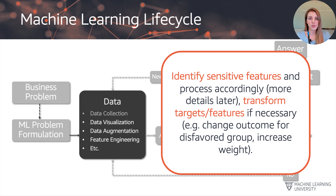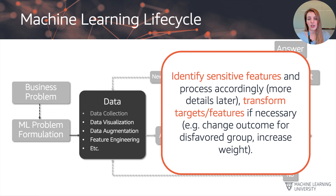When it comes to exploring the data — and we will be doing all of these things in more detail later — it's about identifying sensitive features or sensitive attributes and preparing and processing them accordingly. We may need to transform our data, drop certain columns, and possibly upweight or resample our dataset.